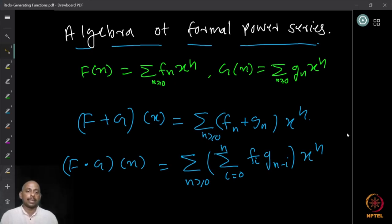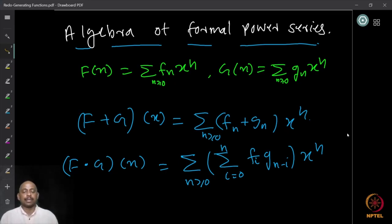The product of two generating functions f and g is f·g(x), which is summation n ≥ 0, summation i = 0 to n, f_i times g_{n−i}, times x raised to n. So the coefficient of x raised to n is summation i = 0 to n, f_i times g_{n−i}.